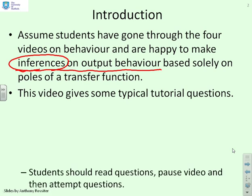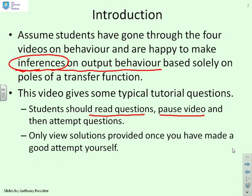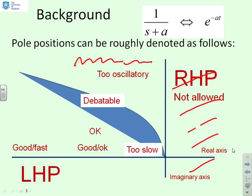We're going to give some typical tutorial questions. The idea is students should read the questions, then pause the video and attempt the questions by themselves before looking at the solutions. As background: depending upon the pole positions, this is roughly what you expect. Anything in the right half plane is bad because it implies divergence; anything with a large imaginary part implies a lot of oscillation. Anything too close to the imaginary axis suggests you're going to be slow, whereas far away suggests you're going to be fast.